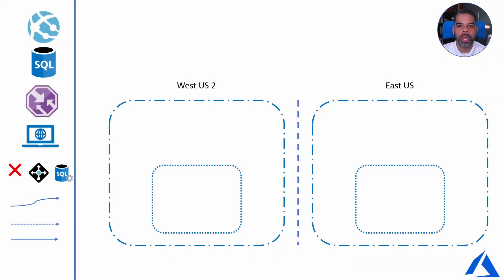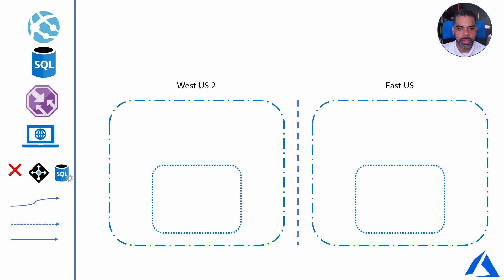I'm going to walk you through what the architecture would look like to set up a resilient web application in Azure, using Azure App Service, Azure SQL Database, and another service known as Traffic Manager. Looking at the diagram, we have two regions. In this case, I'm going to use West US 2 and East US.